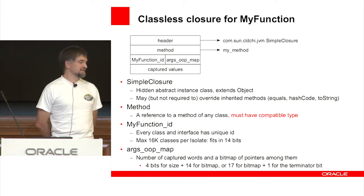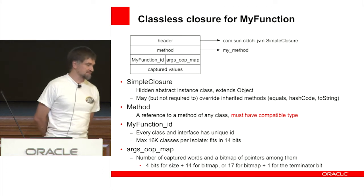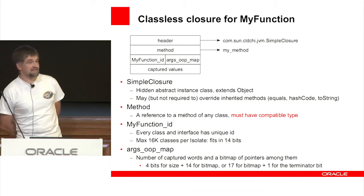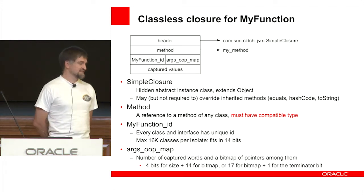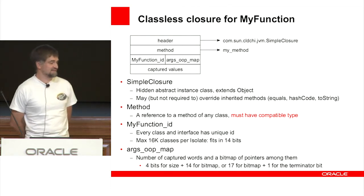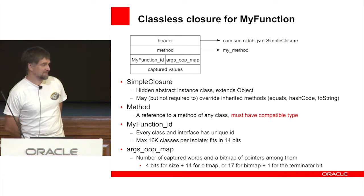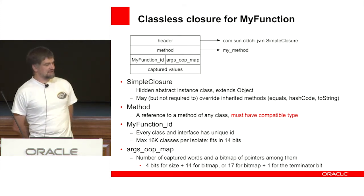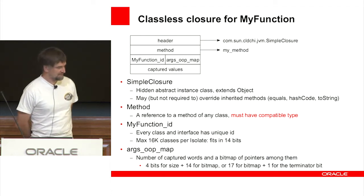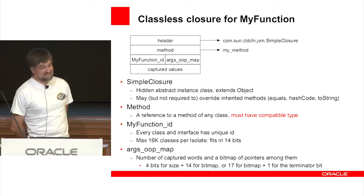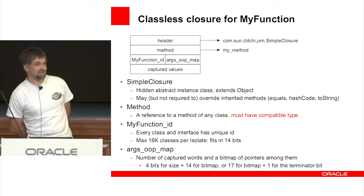In our system there can be a maximum of 16K classes, so the function ID field fits in 14 bits. The second part of that word is the number of captured words and a bitmap of pointers among them, packed into one integer — it can encode up to 14 or 17 captured values. Statistics show that in CLDC applications you typically don't need to capture more than four values in any practical case, so we have more than enough capacity.